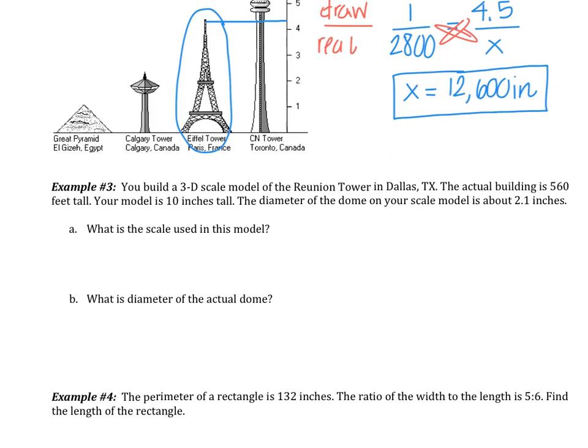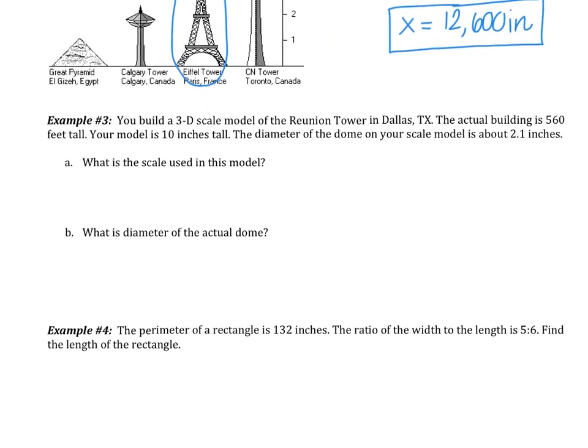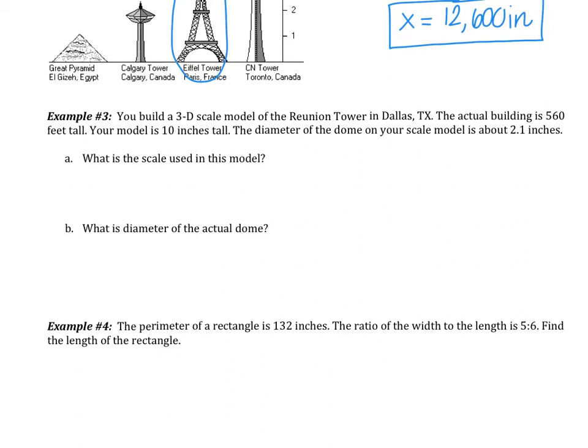Now, number three. You build a 3D scale model of the Reunion Tower in Dallas, Texas. The actual building is 560 feet tall. Your model is 10 inches tall. The diameter of the dome on your scale model is about 2.1. Please take a moment, pause, try this one out on your own.